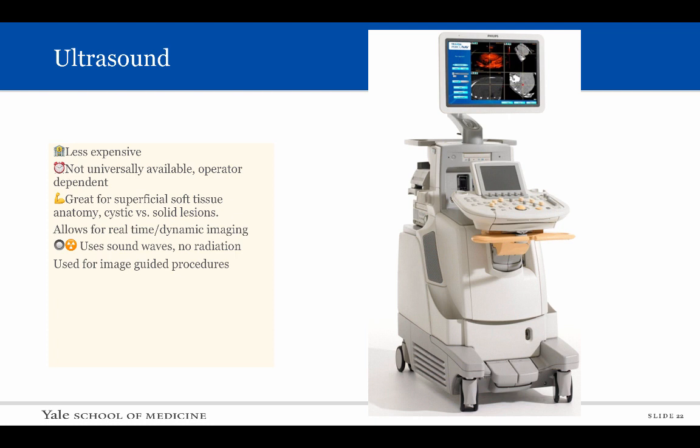Ultrasound is another less expensive modality that we use for certain indications. MSK ultrasound is not yet universally available and quality imaging depends on an experienced technologist and radiologist. Ultrasound is excellent for looking at superficial soft tissue anatomy and determining whether something is cystic or solid. Ultrasound also allows for real-time or dynamic imaging. Because ultrasound uses sound waves, there is no radiation and it is considered safe. We most commonly use ultrasound for image-guided procedures in the superficial soft tissues.